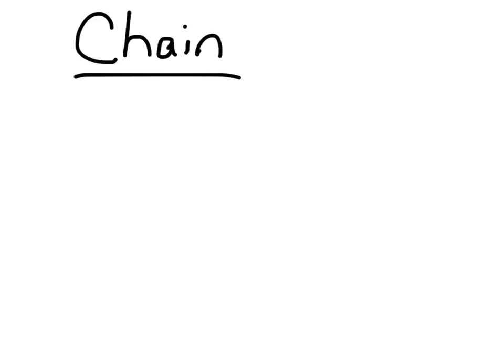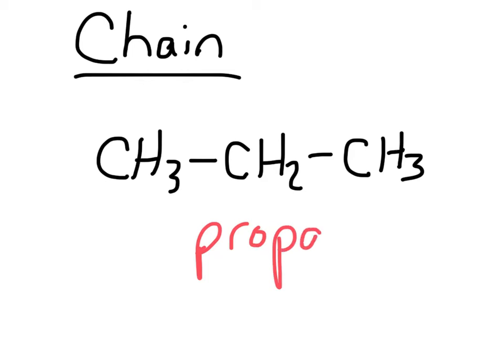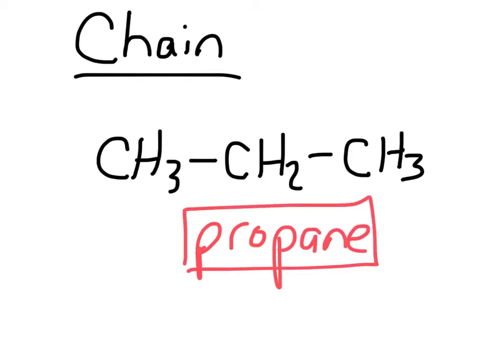So you're probably thinking to yourself, what am I supposed to draw in those boxes? We're just going to draw an example of a chain, a branched chain, and then a ring. Here's our example of just a chain: CH3, CH2, CH3. This actually has a name — this is a structural formula for propane, which you may or may not have heard of before. If you've ever done any grilling, that's what propane looks like structurally.